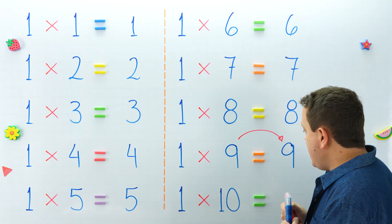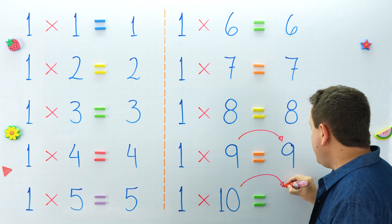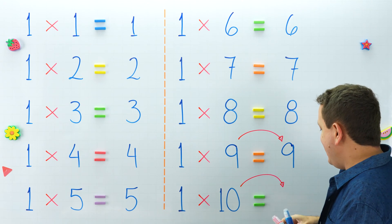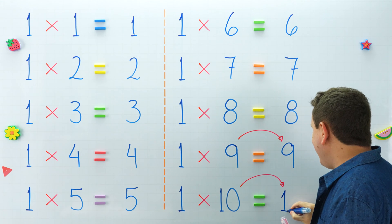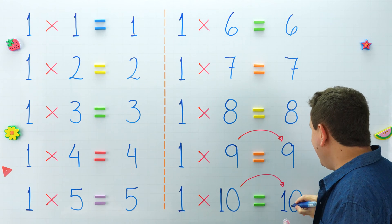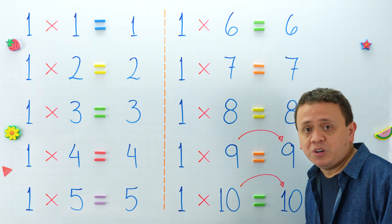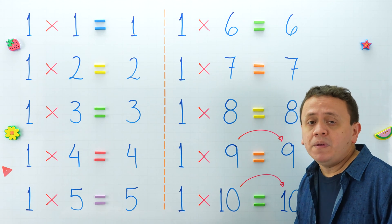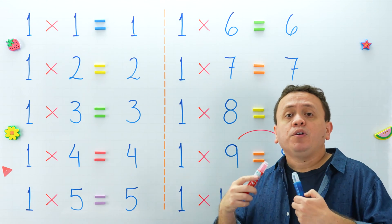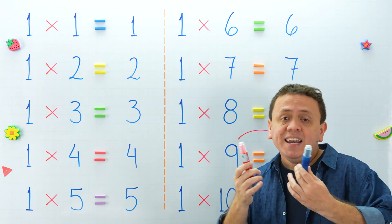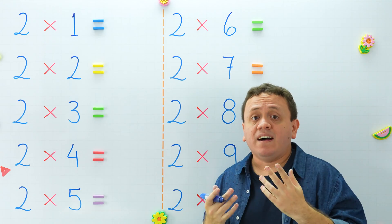1 times 10 equals 10. This is really, really, really easy. And we finish with our first multiplication table, but never forget that property — the product of 1 and any number is that number.